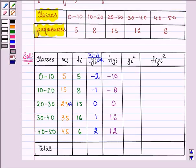Then yi square, that is 4, 1, 0, 1, 4. And then multiplying it by the frequency again, so we have 20, 8, 0, 16 and 24.